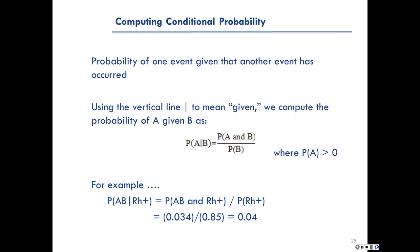Now let's talk about conditional probabilities — the probability of one event given that another event has occurred. We use the vertical line to mean 'given.' We compute the probability of A given B as the probability of A and B jointly in the numerator divided by the marginal probability of B in the denominator. For example, the probability of having AB blood type conditional on being RH positive equals 0.034 divided by 0.85, giving us 0.04.